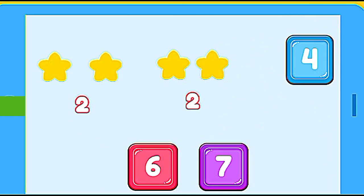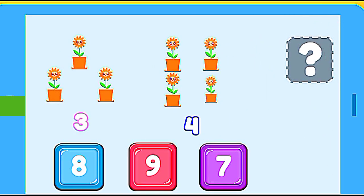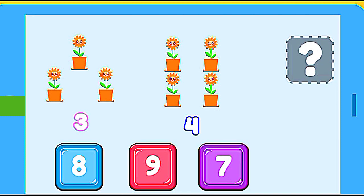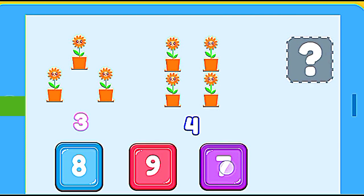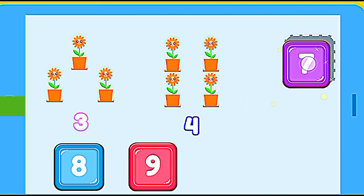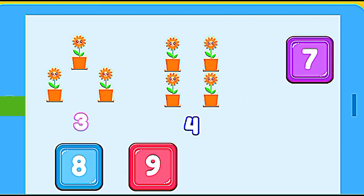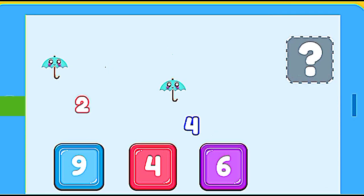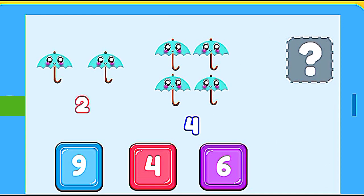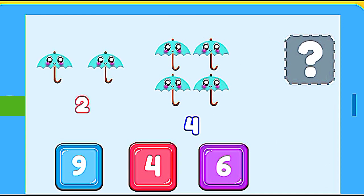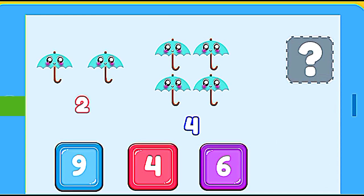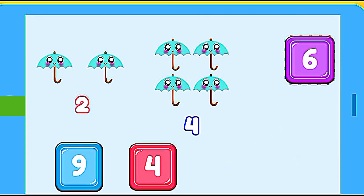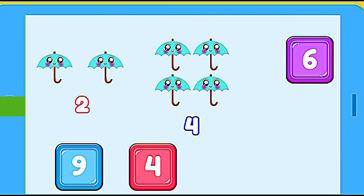How many flowers are? 3 flowers plus 4 flowers. 7. Correct. How many umbrellas are? 2 umbrellas plus 4 umbrellas. 6. Correct.